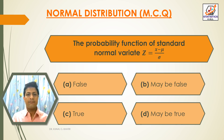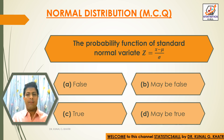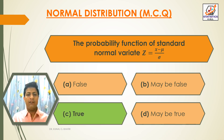Next question: the transformation formula of standard normal variable Z is equal to (X minus mu) upon sigma. Option A: False. Option B: May be false. Option C: True. Option D: May be true. The answer is Option C — True. The formula Z = (X − μ)/σ is correct.